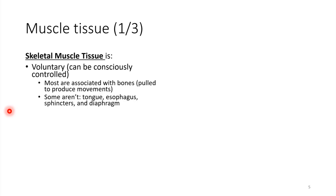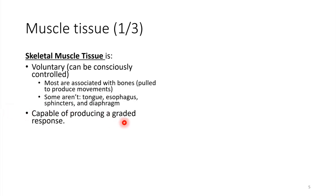One special thing about skeletal muscle tissue is that we can control how strong the contraction is. You can use your arm to pick up something very lightweight, or you can pick up something pretty heavy. Graded responses are possible — we can recruit more muscle fibers if we need to, or not so many if we're trying to pick up something very lightweight.